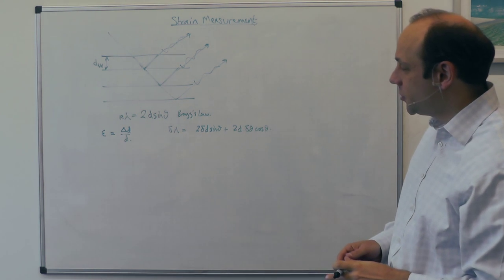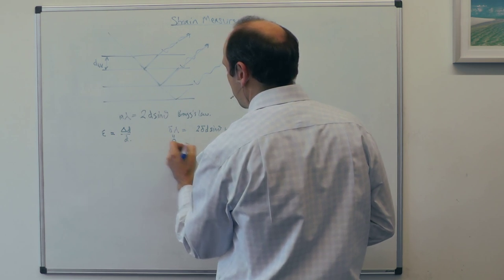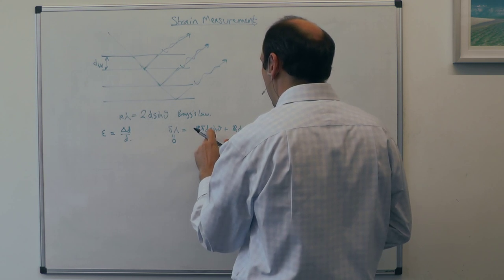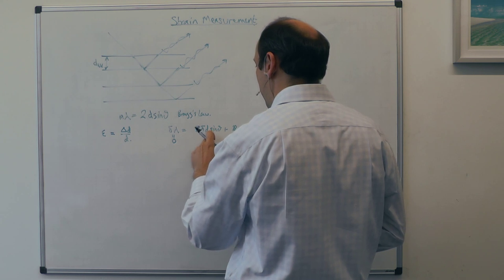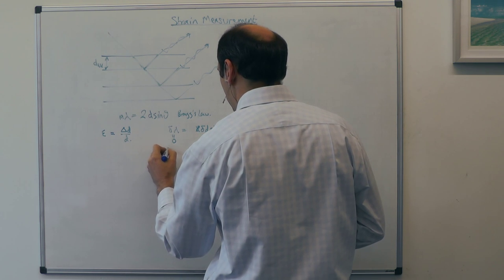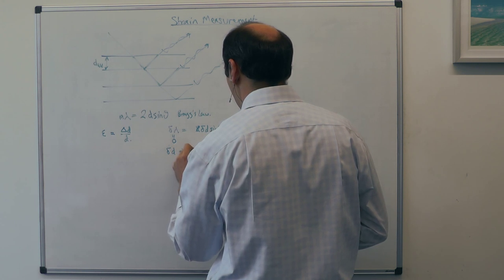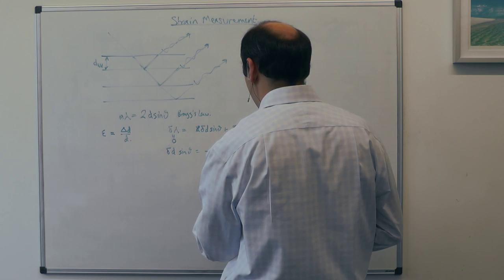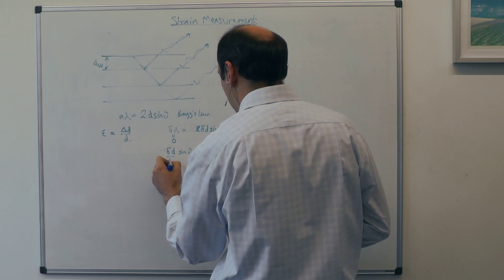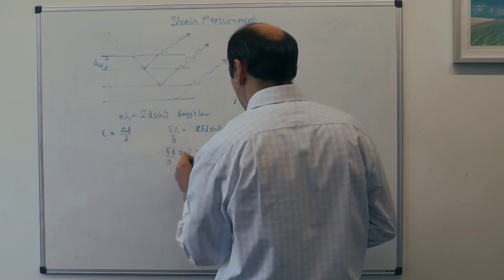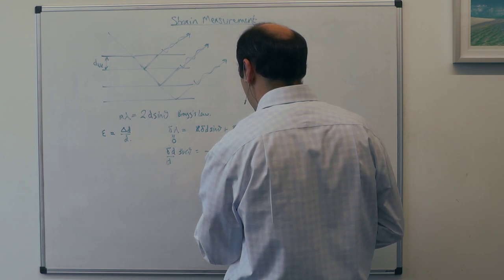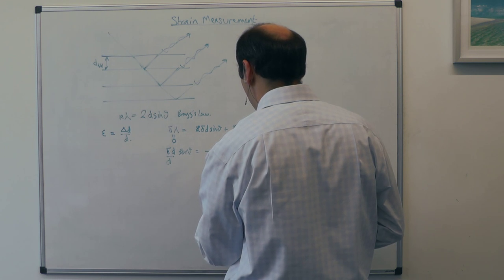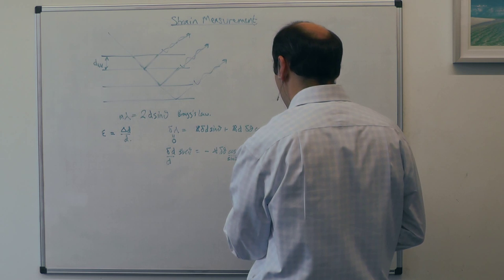we'll have partial λ is equal to 2 partial D sine θ plus twice D partial θ cos θ. Now, if there's no change in wavelength because we're using the same x-ray diffractometer with the same x-rays, then we've got a 0 there, so we can cancel the 2s immediately. If we want to find partial D over D, we'll bring that over there, so we'll have partial D sine θ is equal to minus D partial θ cos θ. If we bring the D down and bring the sine down, we'll have partial D over D is minus partial θ times cos θ over sine θ, which is equal to minus partial θ cot θ.